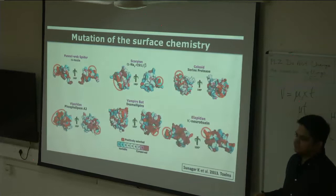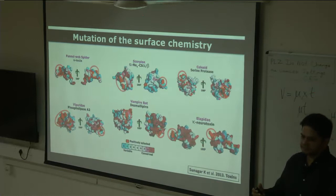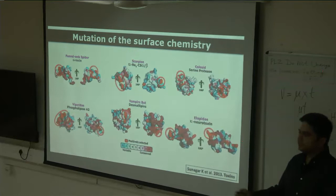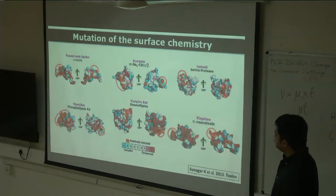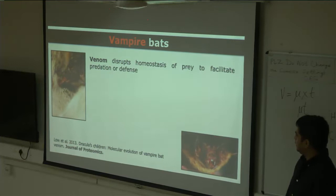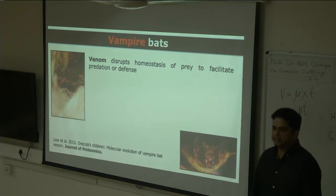Why is mutation of surface chemistry important? It introduces novel residues on the surface which can interact with novel receptors. Imagine a particular animal venturing into a new habitat — if it has a new molecule on the surface, it can interact with new receptors and gain the ability to target new types of animals. This is also useful for evading immune responses. For example, in vampire bats, they already have unique mechanisms to disrupt the blood coagulation cascade, and we found that their venom proteins are also highly variable compared to salivary proteins in other mammals including humans and rats.